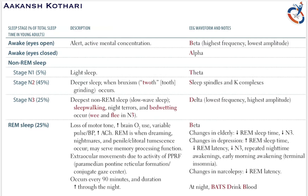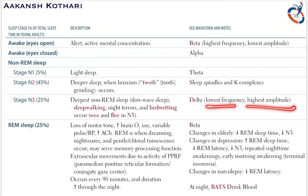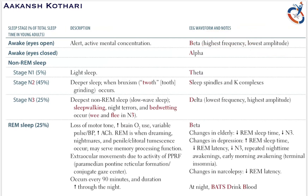The N3 stage is clinically most relevant because problems like sleepwalking, night terrors, and bed wetting occur in this stage. It is the deepest non-REM sleep, deeper than N2, and lasts for 25% of total sleep. N3 produces delta waves, which are the opposite of beta waves — delta waves are low frequency and high amplitude.